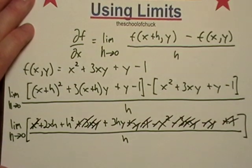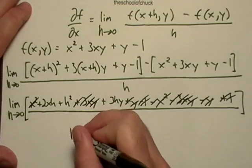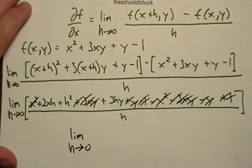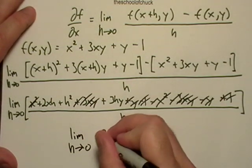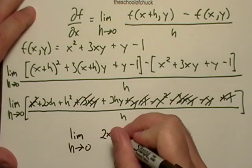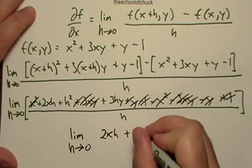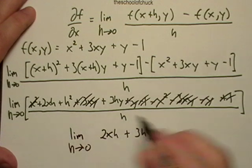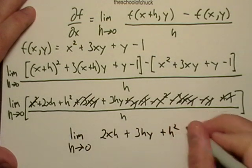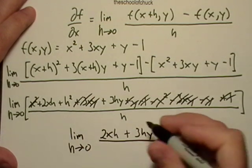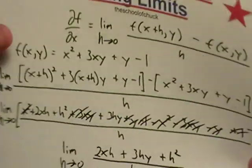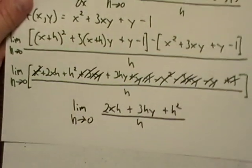So it looks like at the end of the day, we're left with the limit as h goes to zero of 2xh plus 3hy. There's also a plus h squared in there. And I ran out of paper. Didn't see that coming.